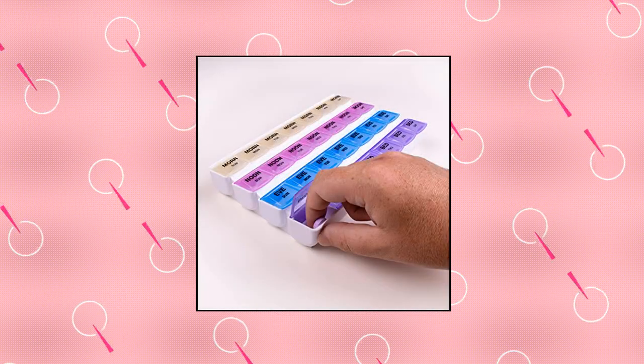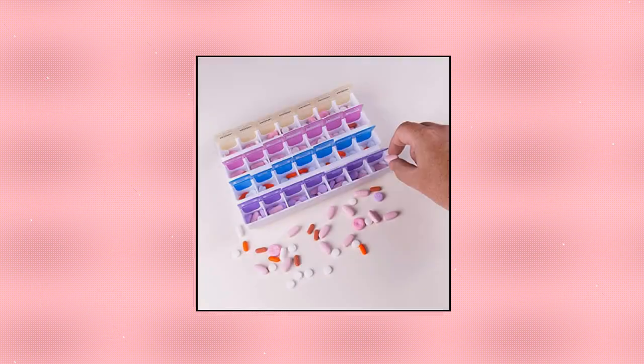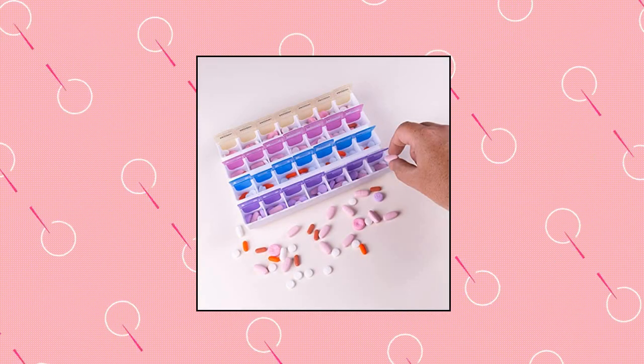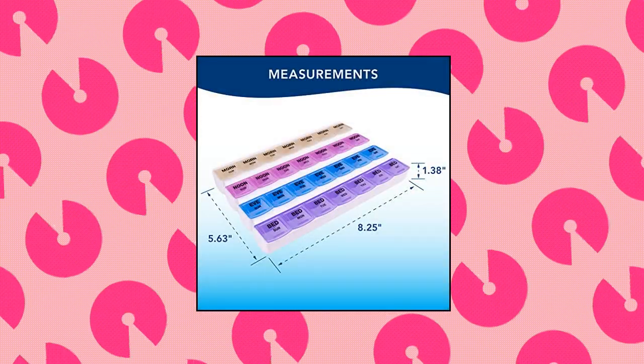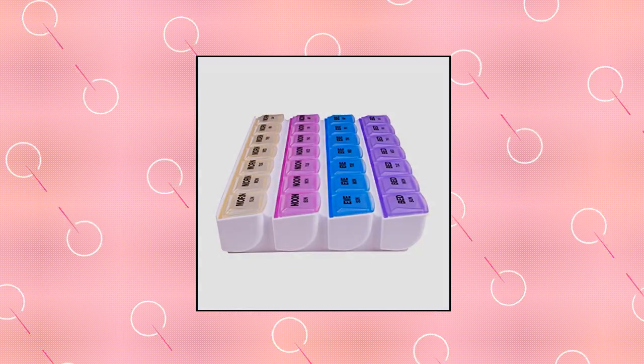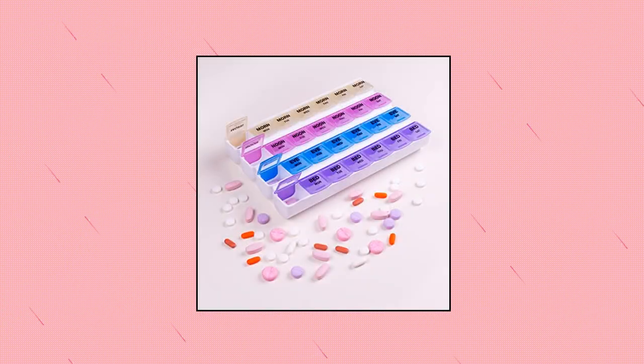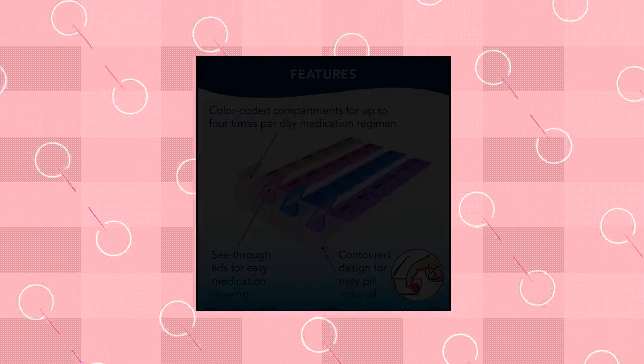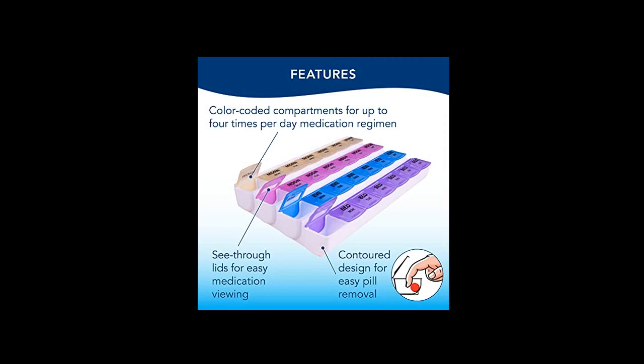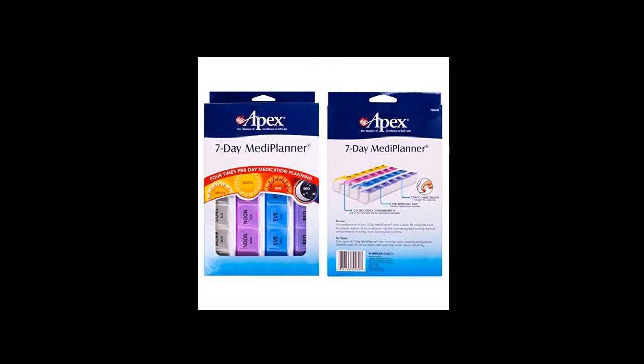Apex 7-day mediplanner pill organizer. Easily see whether you've taken your medication with this easy open, four times a day pill organizer for all seven days of the week. This sturdy plastic pill box lets you organize vitamins or medication by time of day and day of the week. This seven-day pill box lets you organize medication for the morning, afternoon, evening, and bedtime. Color-coded, see-through.